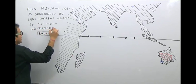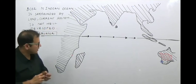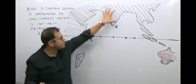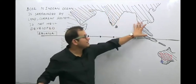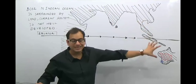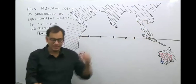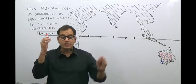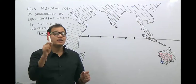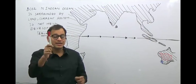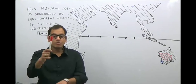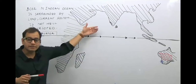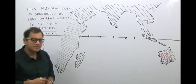The current system is not very well developed because the northern Indian Ocean is surrounded by Africa, the Middle East, the Indian subcontinent, and Southeast Asia — including Java and Sumatra. The current system is therefore not well developed. Remember the color codes: red stands for warm ocean currents and blue stands for cold ocean currents.